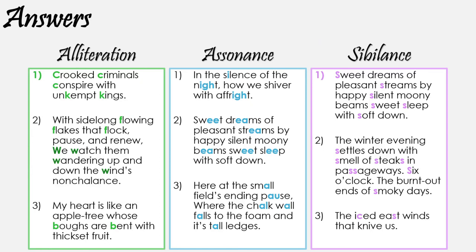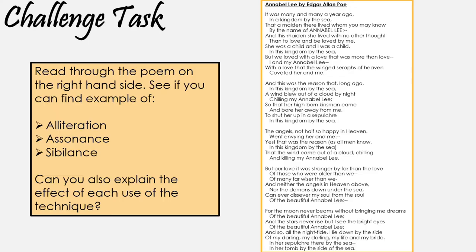And you've got the answers here. Give yourself a mark and see how many you got right. Why not challenge yourself? Pause the video and read through Annabel Lee, a poem by Edgar Allan Poe, and see if you can spot the examples of alliteration, assonance or sibilance, as well as the effect of each technique in the context that it's used.